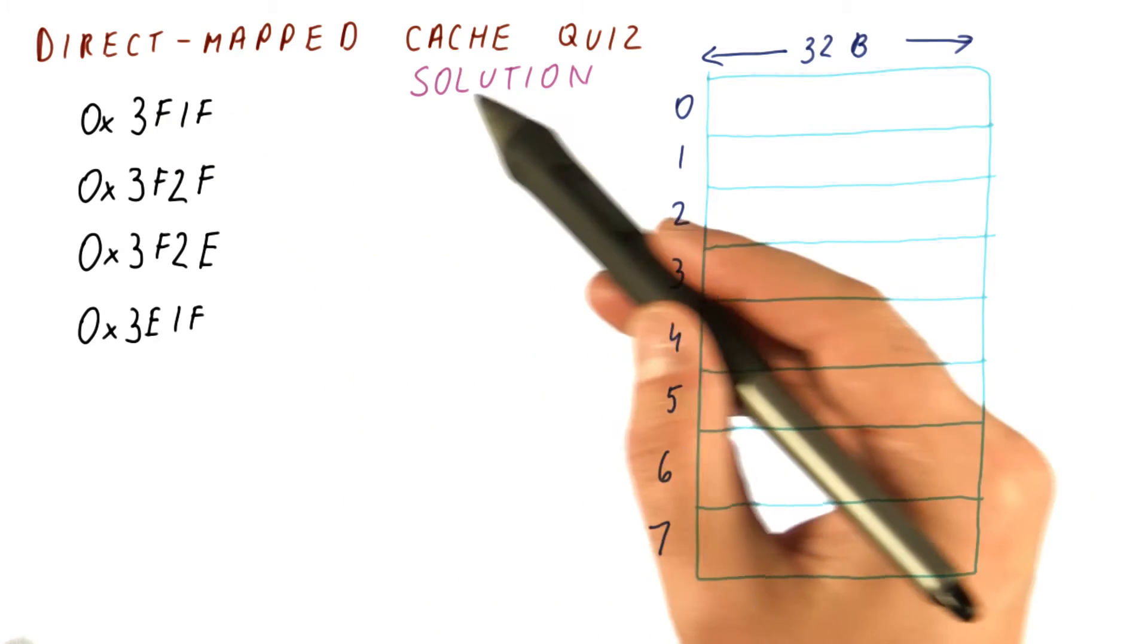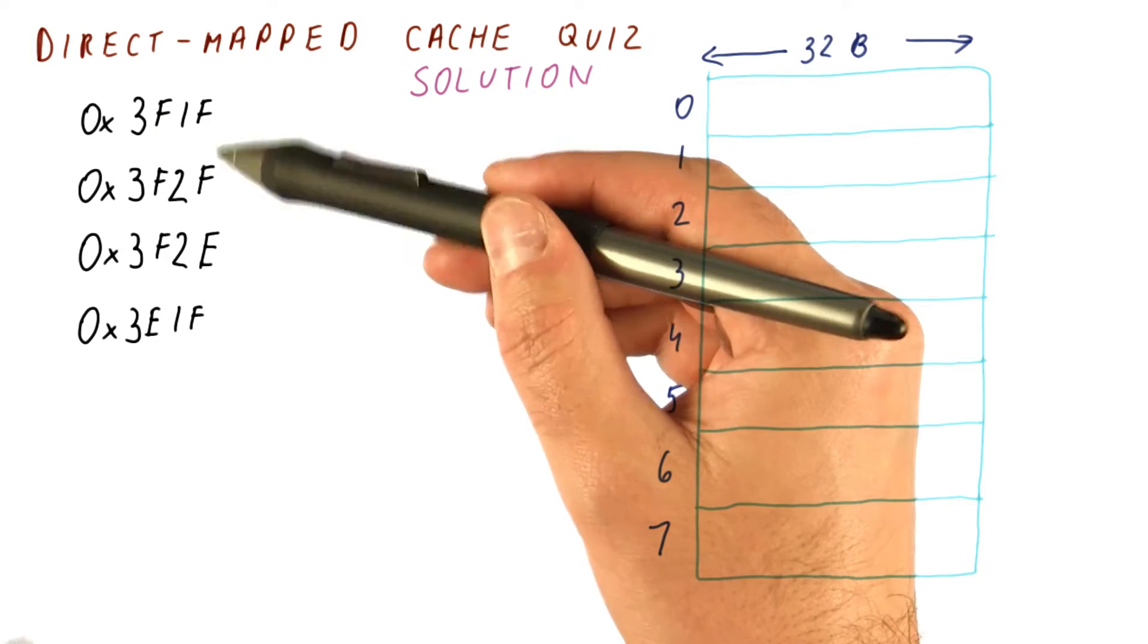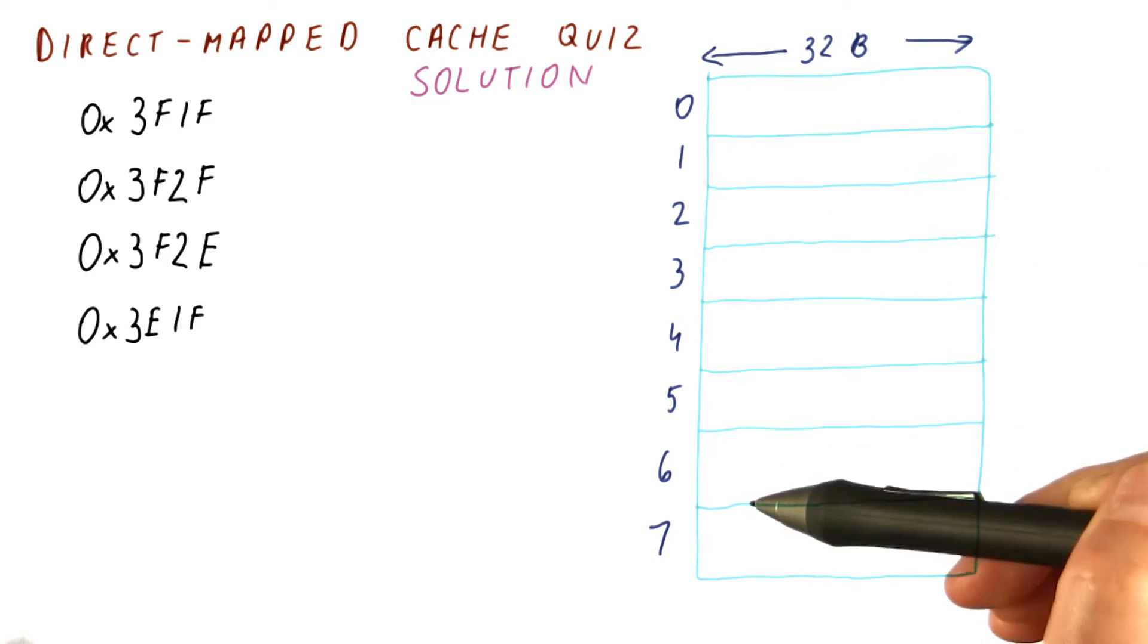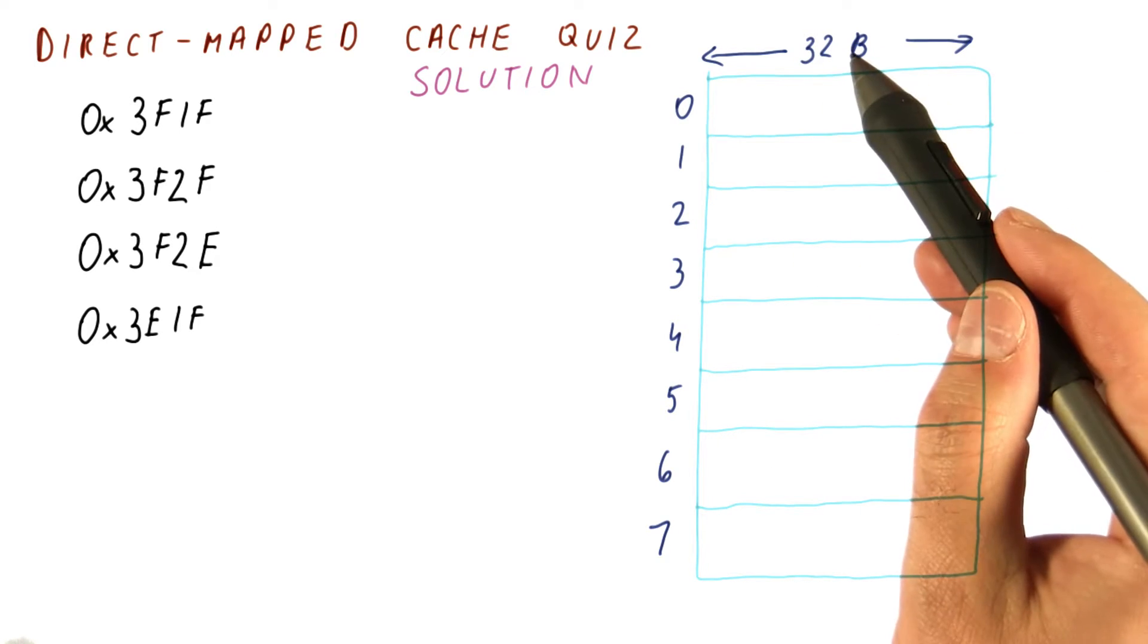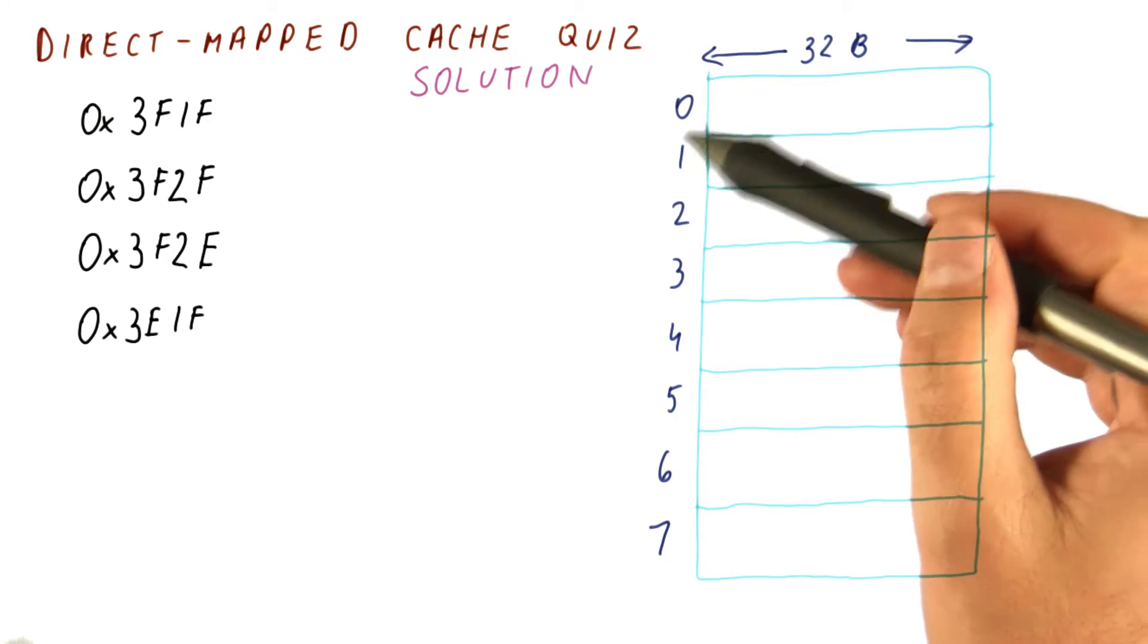Let's look at the solution for our direct-mapped cache access quiz. We have these four accesses in this cache. The cache block is 32 bytes, and there are eight blocks in the cache.